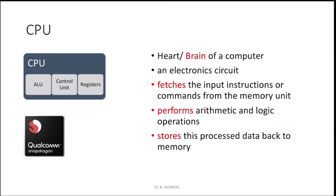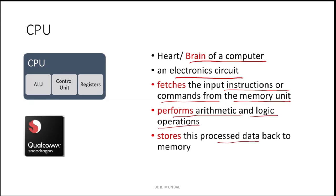CPU is the heart or brain of the computer. It is an electronic circuit that takes input instructions or commands from the memory unit and performs arithmetic and logical operations, then stores the processed data back to memory. It has three units — the control unit and registers. Examples include Qualcomm Snapdragon processor, which most Android phones use, and Intel i7, which desktops and laptops use.